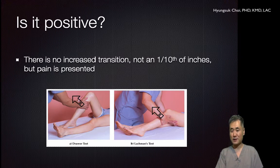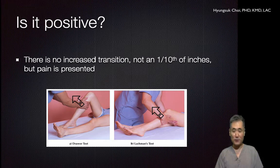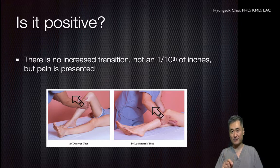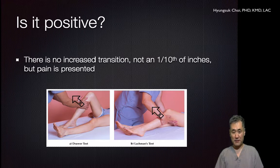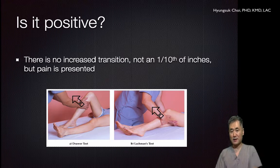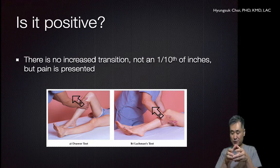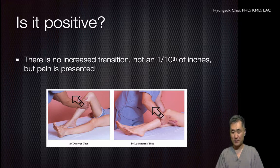Let's suppose you have a patient with knee joint pain who injured the right side of their knee — through a fall, soccer, or skiing — so you suspect an ACL tear. How can you confirm your hypothesis by doing a drawer test or Lachman's test? The conventional textbook positive sign is translation of the shin forward, meaning rupture or total tear of the ACL ligament.